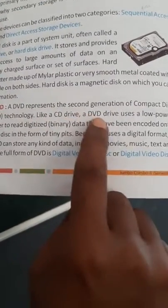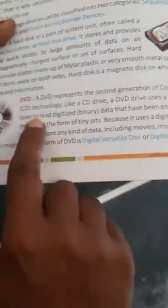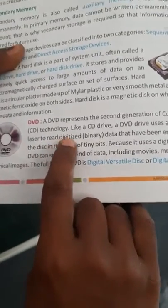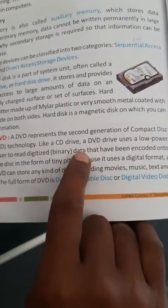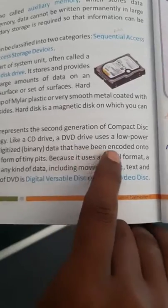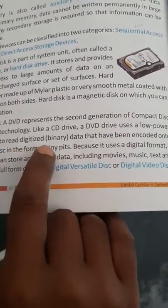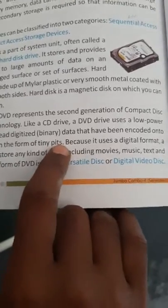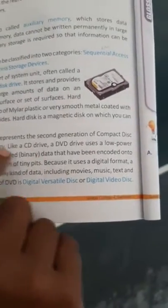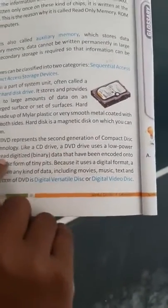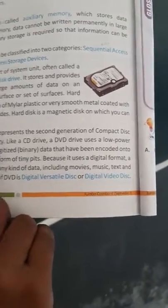Like a CD drive, a DVD drive uses a low power laser to read digitalized data that have been encoded onto the disk in the form of tiny bits. To write the data or information, the laser power is used. Low power laser is used, and to read also, the laser is used again.